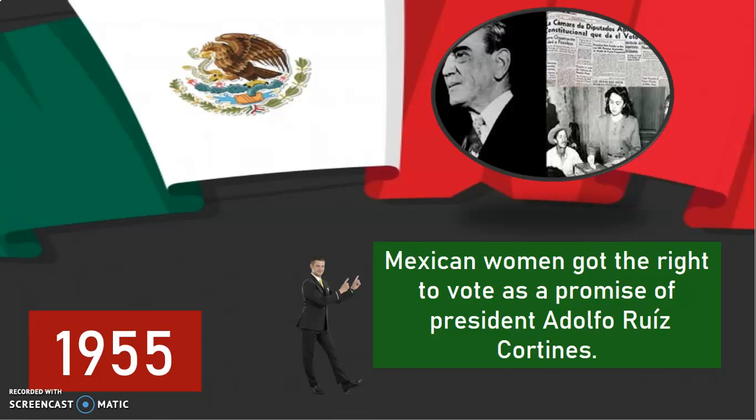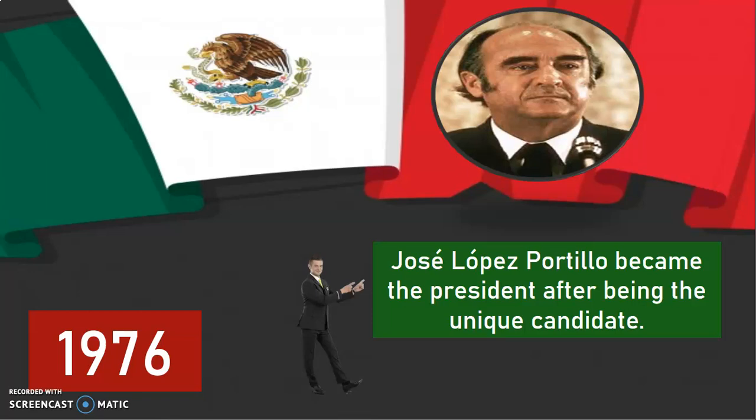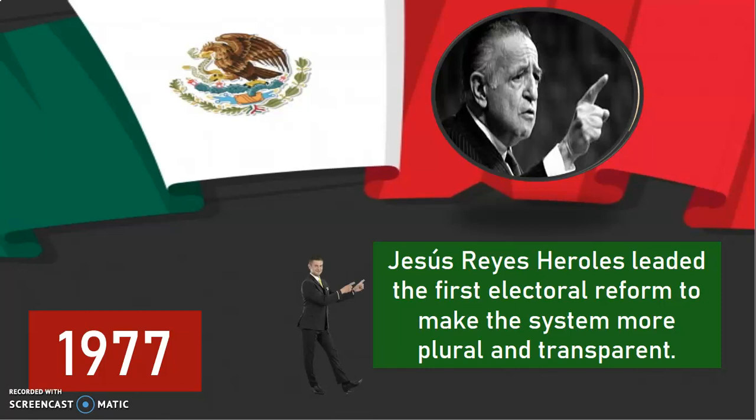In the year 1976, can you believe that José López Portillo became the President after being the unique candidate? That provoked that in the year 1977, Jesús Reyes Heroles led the first electoral reform to make the system more plural and transparent.